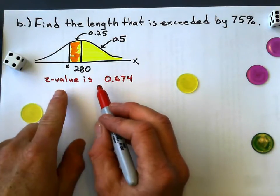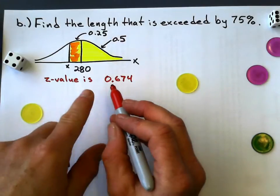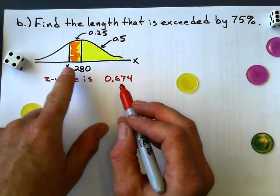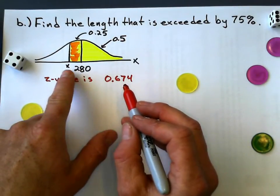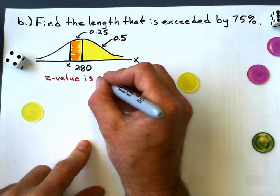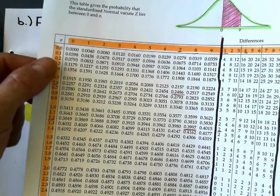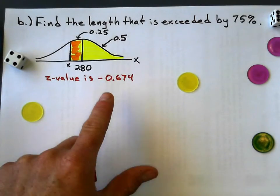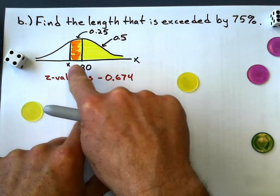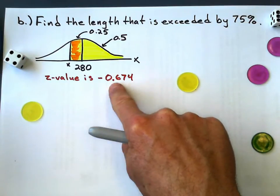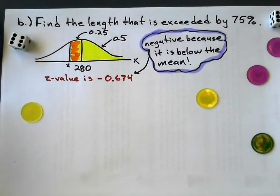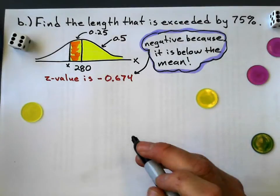Now before I do anything, my Z value, which I need to do to plug into the formula, if it's below the mean, which it is, this is why shading is important here, if it's below the mean, my Z value will be negative. They don't give you negative Z values on this. All these Z values are positive. But we need to remember, if the value is below the mean, the Z value will be negative. There's our helpful reminder.